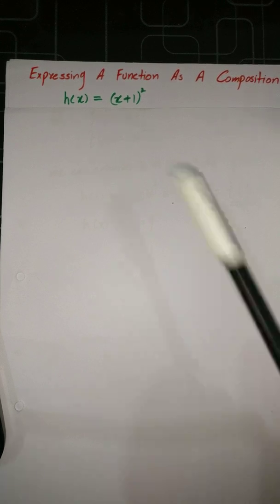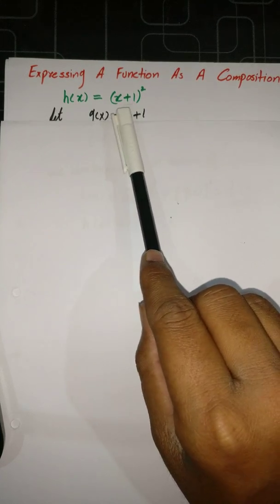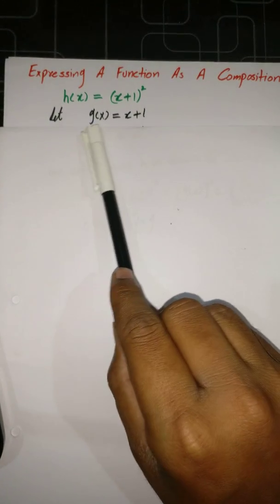So sometimes, dear students, we have a function and we have to decompose it — we have to write it as a composition of two functions. So let's suppose we have an example: h(x) = (x+1) squared, and the question is that we have to break this function into two functions as a composition. So the inner part under the bracket, which is x+1, we just let this equal to another function, say g(x).